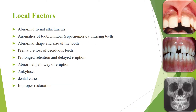Local factors responsible for malocclusion include abnormal frenal attachments, anomalies of tooth number such as supernumerary or missing teeth, abnormal shape and size of teeth, premature loss of deciduous teeth, prolonged retention and delayed eruption, abnormal pathway of eruption, ankylosis, dental caries, and improper restoration.